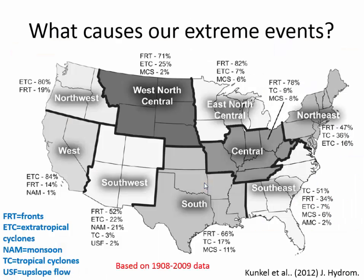So what causes these extreme events? In the Southwest, most extreme events are from frontal activities — cold fronts. About 52% of extreme events in the four Southwest states are from fronts, 22% are from extratropical cyclones, the monsoon causes about 21% of extreme events, and then other things like tropical cyclones in the fall and upslope flow as air goes up the mountains causing storms. Remember, most extreme events in this area are from fronts.